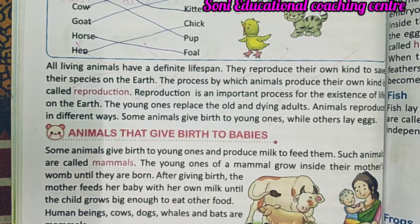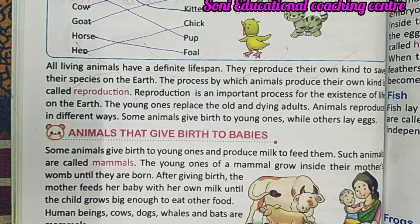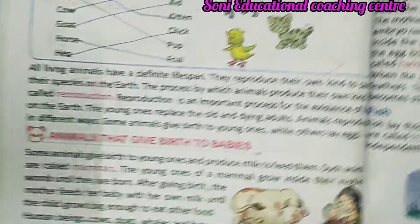Human beings, cow, dog, whale, and bats are mammals. मनुष्य, गाय, कुत्ते, whale मछली और bat (चमगादड़) — ये सारे स्तनधारी हैं।